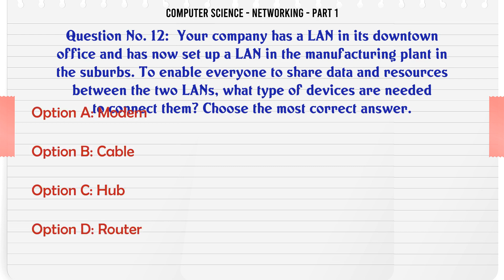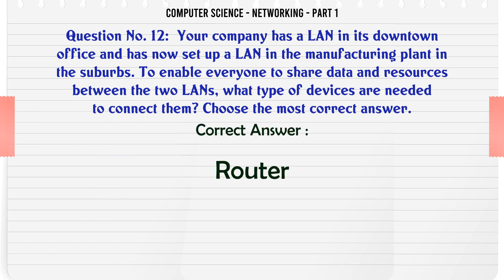Your company has a LAN in its downtown office and has now set up a LAN in the manufacturing plant in the suburbs. To enable everyone to share data and resources between the two LANs, what type of devices are needed to connect them? Choose the most correct answer. A. Modem. B. Cable. C. Hub. D. Router. The correct answer is: Router.